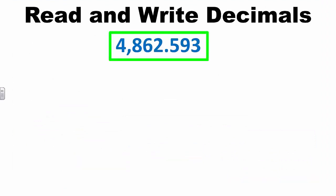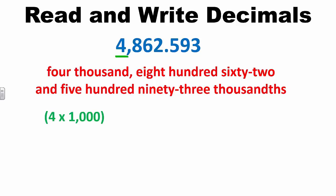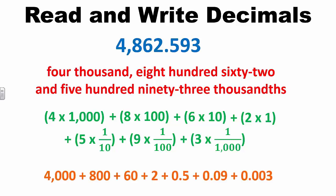At this level, students should be able to verbally read the number as 4,862 and 593 thousandths. Students should also be able to write the number in word form. Notice that the word AND is only used at the location of the decimal point. Additionally, students should be able to recognize the value of each digit by its place value position and write the number in expanded form. For example, students should understand that since the 4 is in the thousands place, this is equivalent to 4 times 1,000. Students continue this process to show the value of the other digits as 8 times 100, 6 times 10, 2 times 1, 5 times 1 tenth, 9 times 1 hundredth, and 3 times 1 thousandth. This can also be written as 4,000 plus 800 plus 60 plus 2 plus 5 tenths plus 9 hundredths plus 3 thousandths.